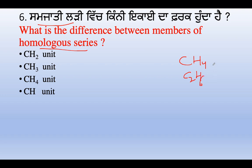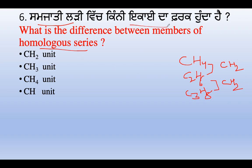Sixth question: what is the difference between successive members of a homologous series? Each successive member differs by a CH2 unit. For example, CH4 (methane) to the next member. The answer is option A: CH2 unit.